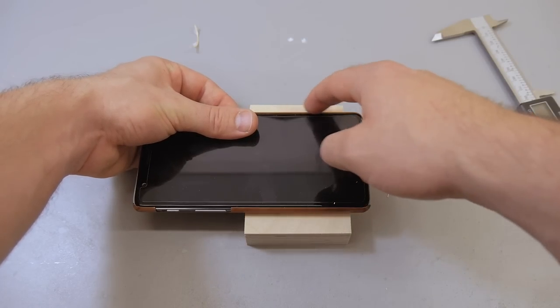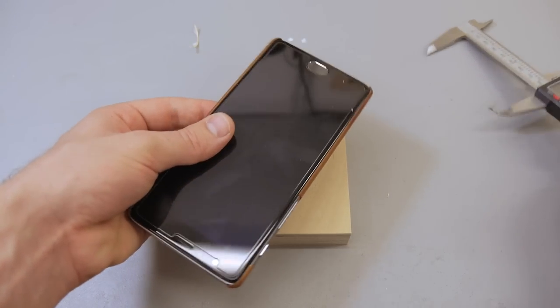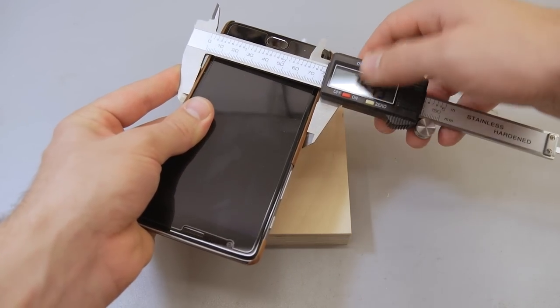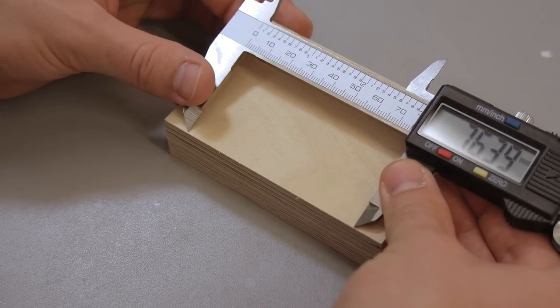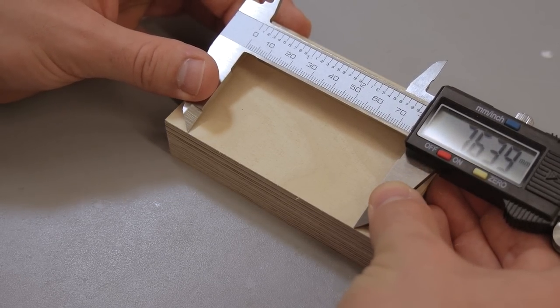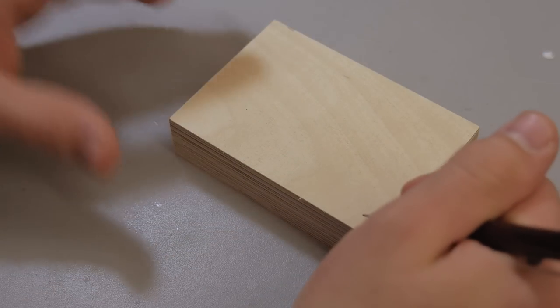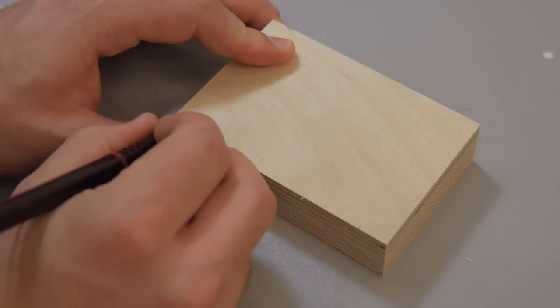Now I need to cut a slot into the block that's exactly the width of the phone. I'll roughly center the caliper and directly scratch into the wood with it. With a pencil I can make the marks visible.